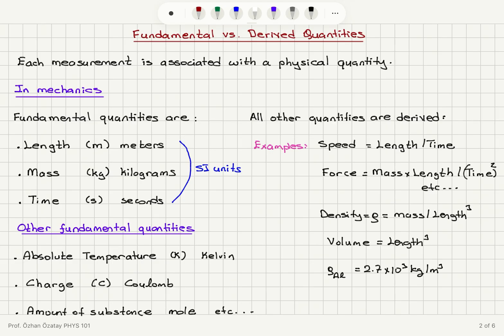When we talk about other branches of physics, we have additional fundamental quantities. For example, in thermodynamics we have absolute temperature, measured in Kelvin. In electromagnetism we have charge, measured in coulombs. Amount of substance is measured in moles, and so on.